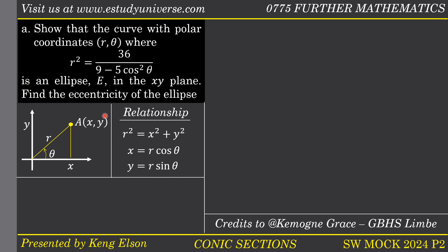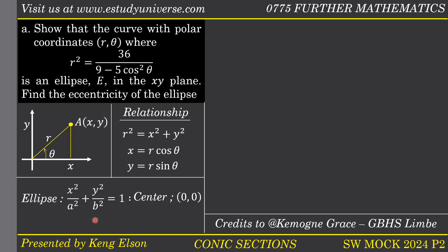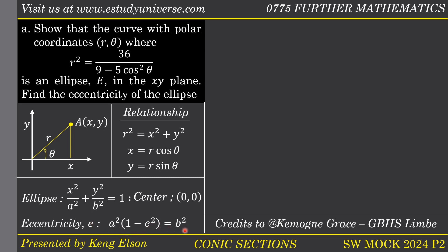Now, how does an ellipse look? In the Cartesian plane, an ellipse has the standard equation x squared over a squared plus y squared over b squared equals one, with center at the origin (0, 0) — that's why we call it a standard equation. There is also a general equation where the center is not at the origin. Regarding eccentricity, the eccentricity of an ellipse follows the formula: a squared times (1 minus e squared) equals b squared. When you have your ellipse in standard form, you deduce a squared and b squared and use this formula to find the eccentricity.